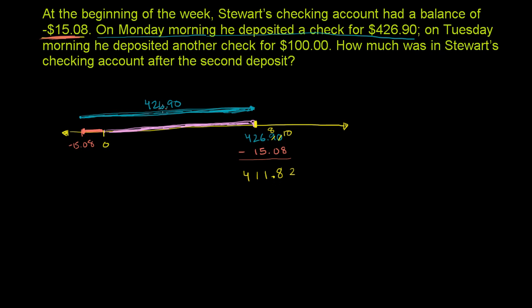Another way to think about it: it was $426.90 plus negative $15.08. Adding a negative is the same thing as subtracting the positive, so it's $426.90 minus $15.08. Hopefully these arrows give you a good visualization of what's happening.